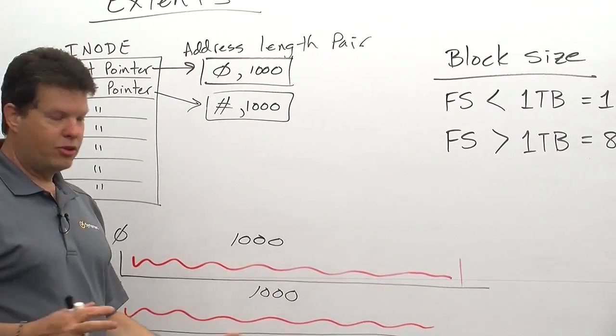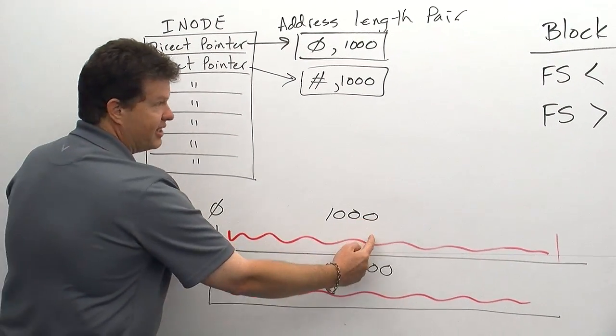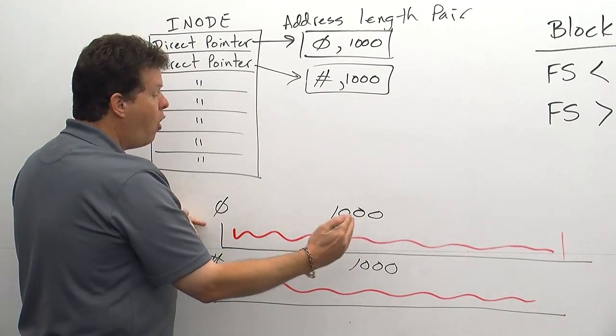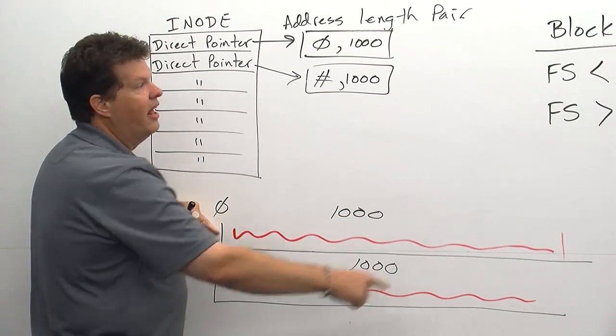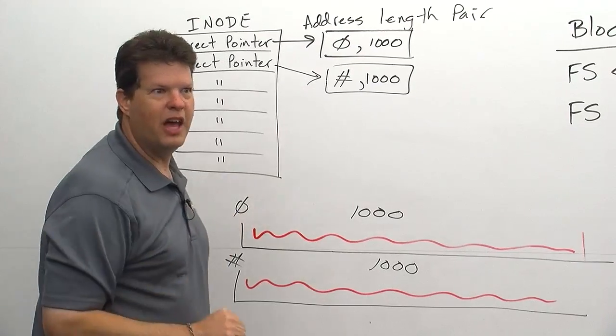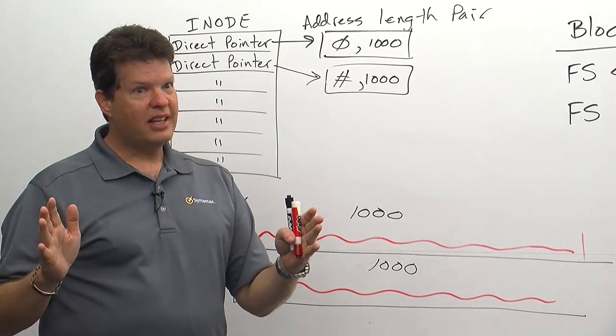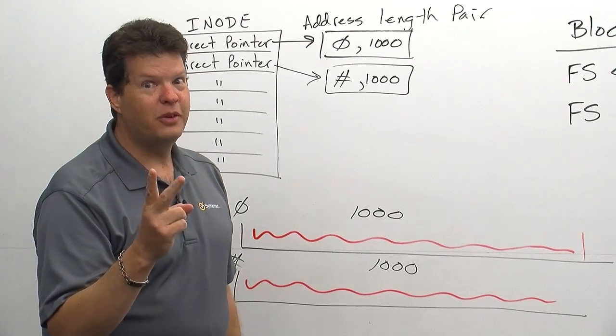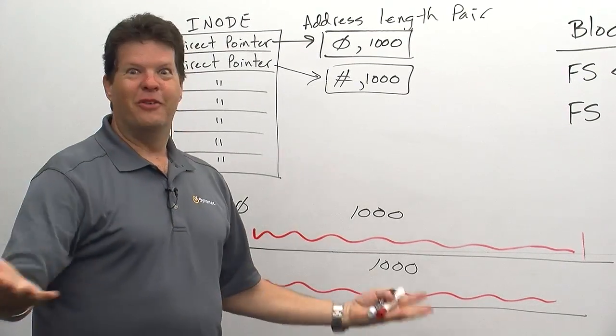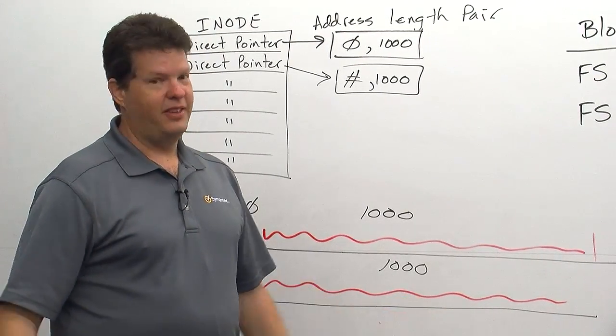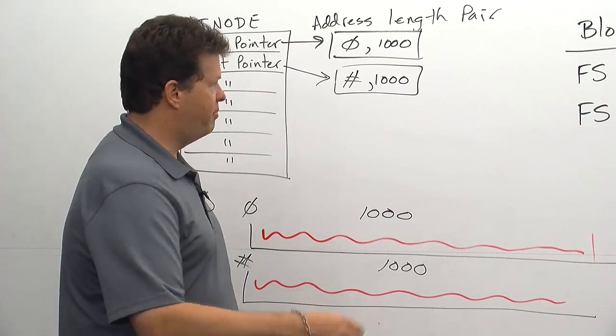So you've got to keep track of this because extent size cannot be any smaller than the default block size. So if you have a greater than one terabyte file system, 8k block size, and you're writing 2k files to it, well, you're going to run out of disk space before you run out of disk space, if you understand what I mean. Very important piece of the puzzle right there.